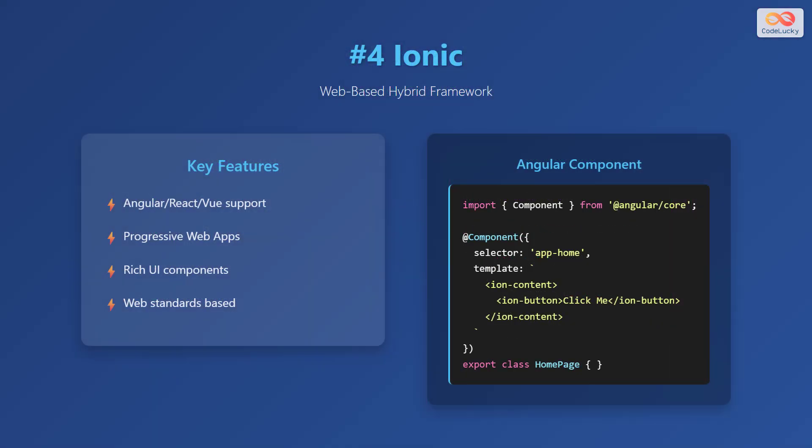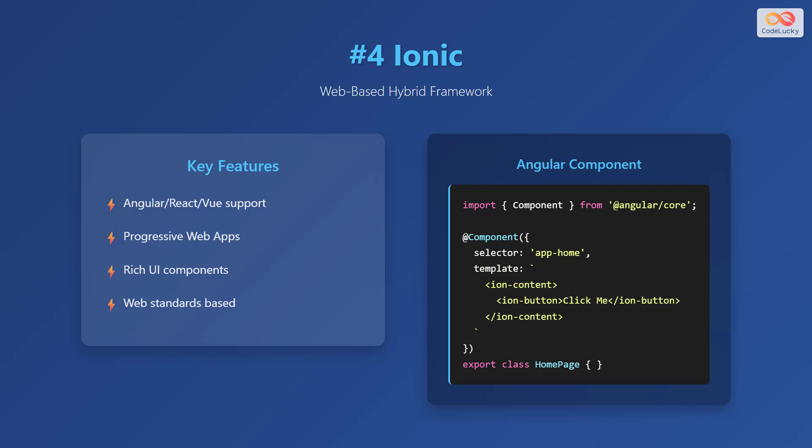The fourth platform is Ionic, a web-based hybrid framework that allows developers to build cross-platform mobile applications using web technologies. Key features include Angular, React, and Vue support, progressive web apps, rich UI components, and it is based on web standards. The Angular component code shows an Ionic application using Angular — it imports the component from Angular Core, defines a component with the selector 'app-home', and the template includes Ionic content with a button that says 'Click Me'.